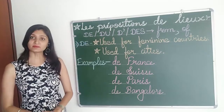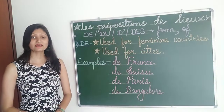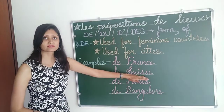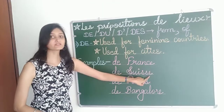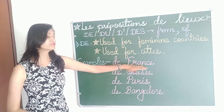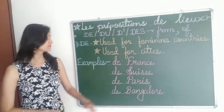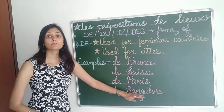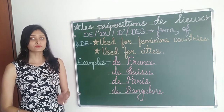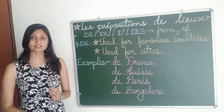De is used for feminine countries and used for cities. For example, de France, de Suisse. Now both are ending with 'e', which means these are feminine countries. So the meaning will be 'from France, from Switzerland'. Now let's have a look at cities: de Paris, de Bangalore — from Paris, from Bangalore. So before feminine countries and before cities, we use the preposition de.